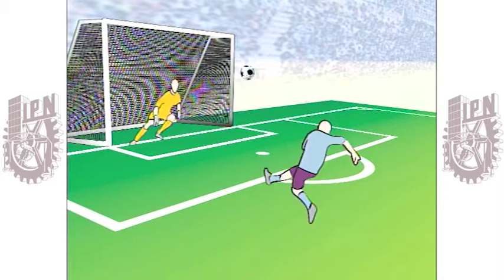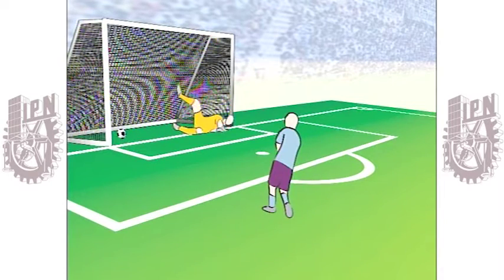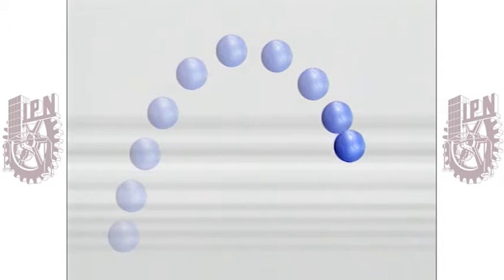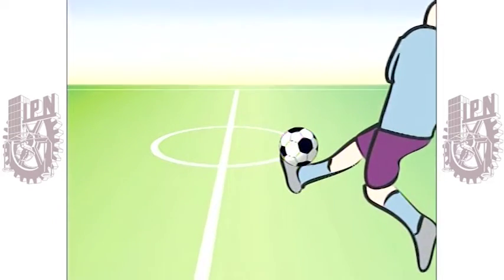En virtud de estos dos movimientos, todo objeto lanzado al aire describe una parábola. Por ejemplo, el movimiento de una pelota que se tira al aire formando un ángulo con la horizontal.